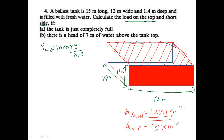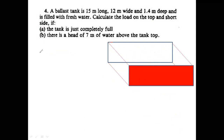This numerical is a combination of the horizontal plane and the vertical plane. For condition 1, the tank is just completely full up to the tank top. We take condition 1 first. To find the load on the tank top, it is a horizontal plane problem. The formula becomes P = ρgH.